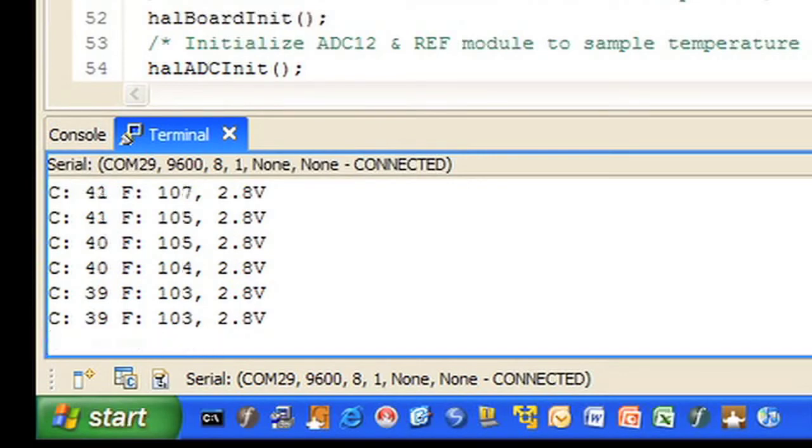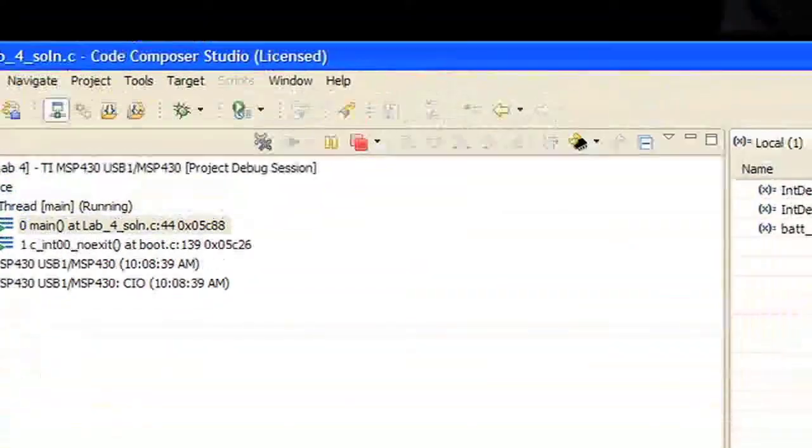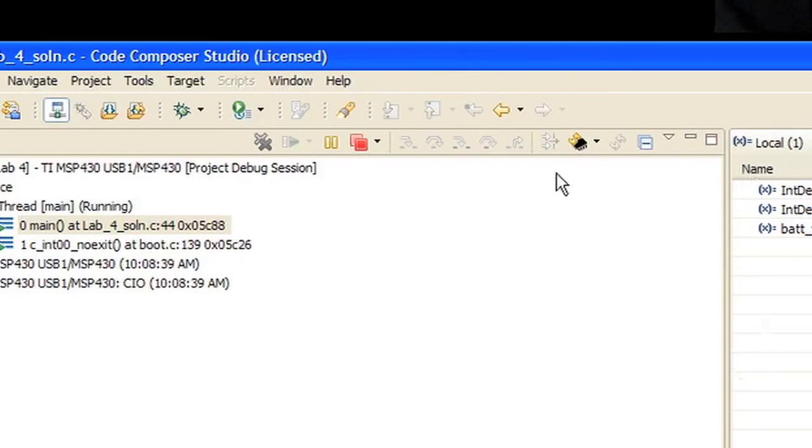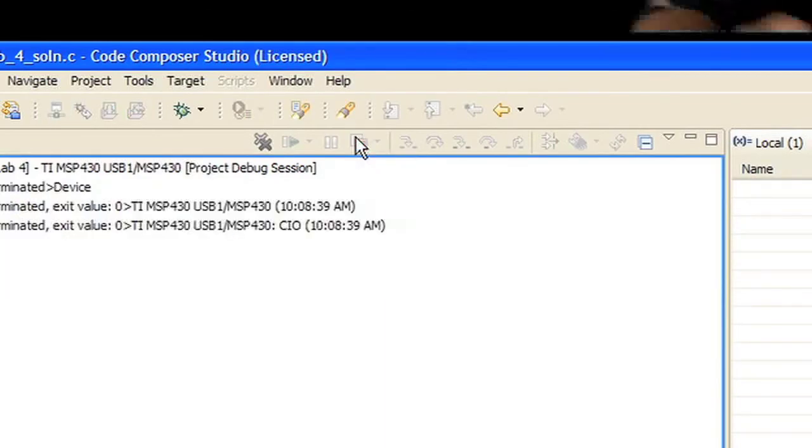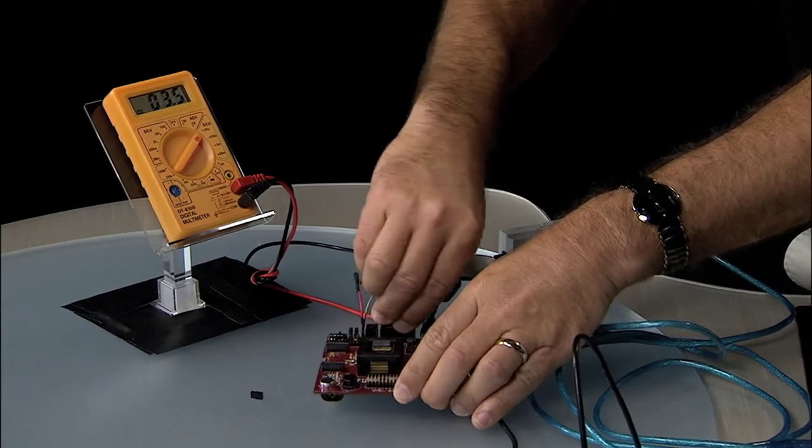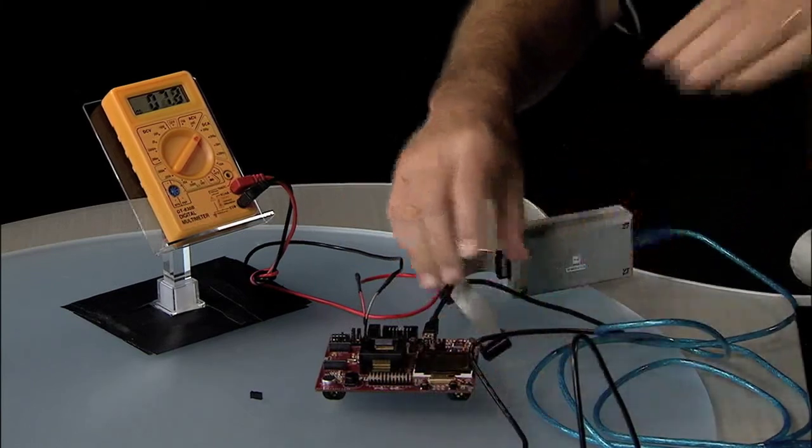So for the current measurement in step 8, we want to go ahead and reach over and disconnect the JTAG cable from the board. I'll click the Terminate All right here, and I'll disconnect this.